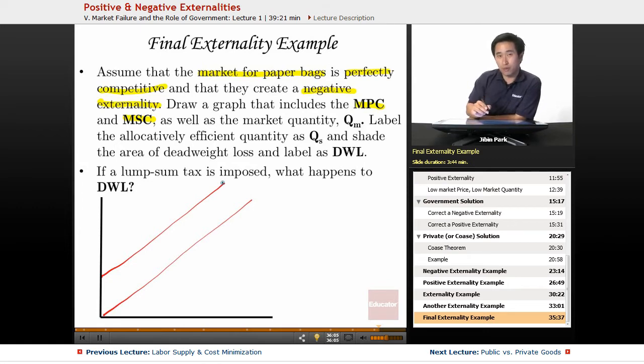Remember the formula is MSC equals MPC plus MEC. The smaller one is going to be the marginal private cost, and so this is the marginal social cost.